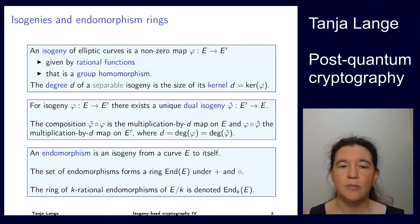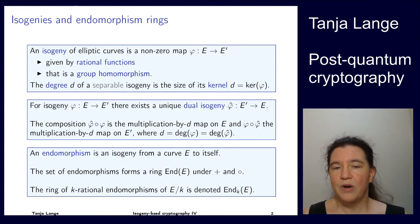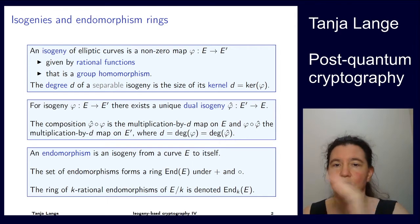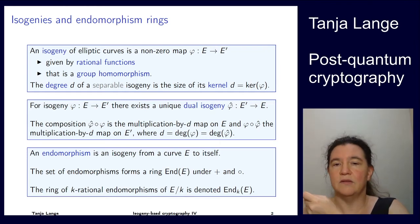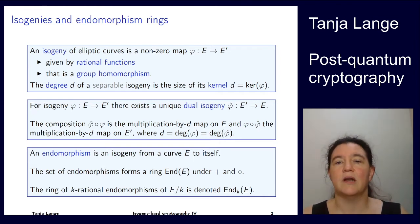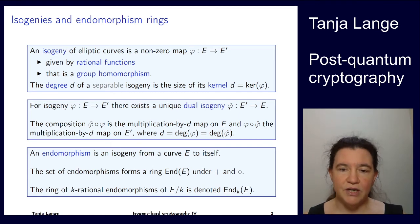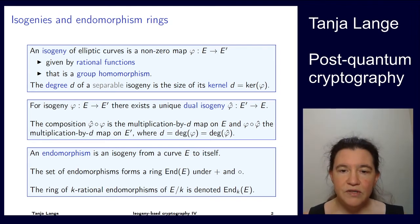We're now looking at maps that come from a curve to itself — isogenies from a curve to itself — and such maps are called endomorphisms. When you have such isogenies you can compose them with addition, since each isogeny operates on points. You can define the sum of two isogenies from E to E prime by taking the sum of the images. So for phi and psi, phi plus psi means taking the images and adding them there. If you're mapping from E to itself you also have composition, and under these two operations — addition and composition — the set of endomorphisms forms a ring.